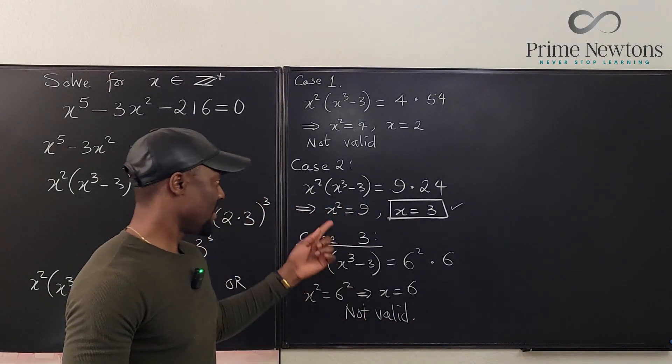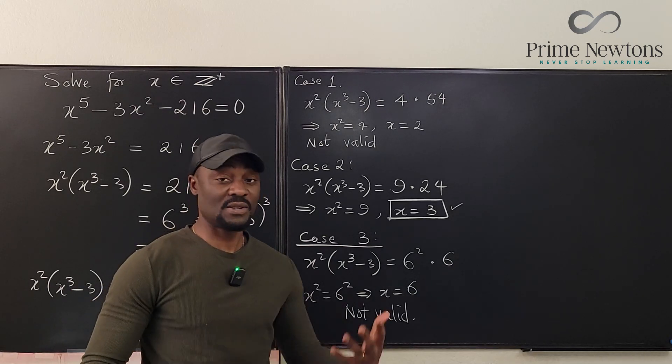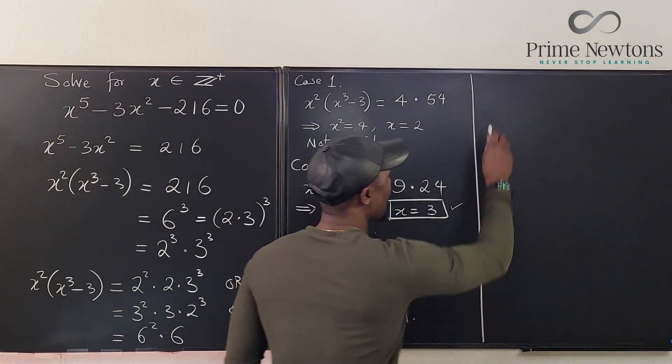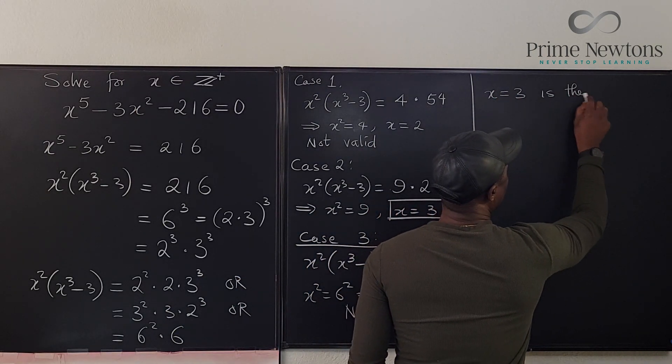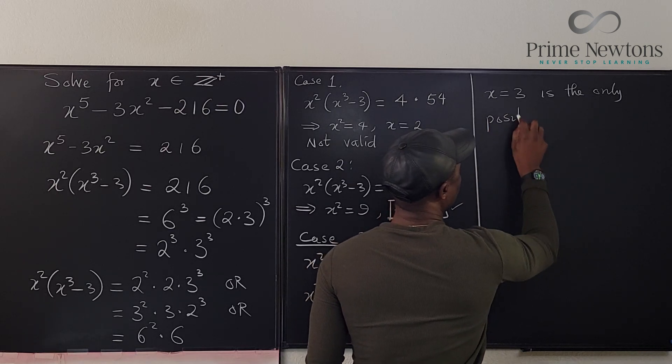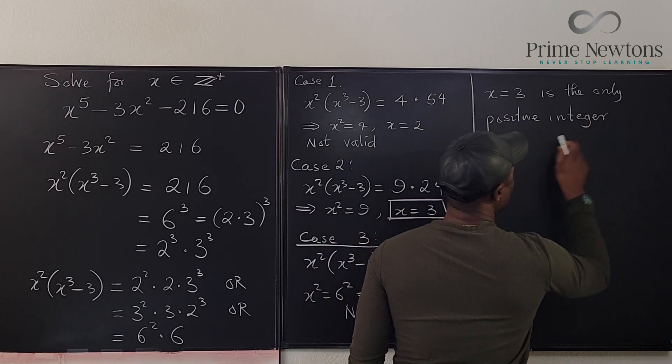So because we're only looking for integer solutions, this is the only integer solution to this equation. x equals 3 is the only positive integer solution.